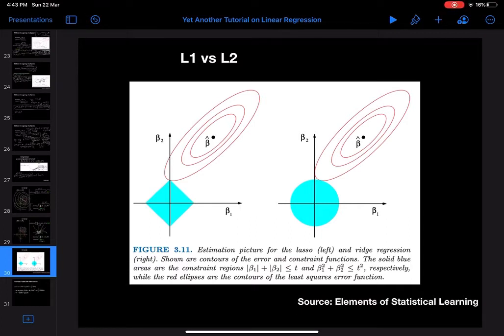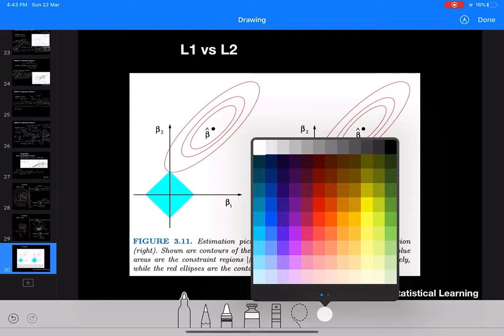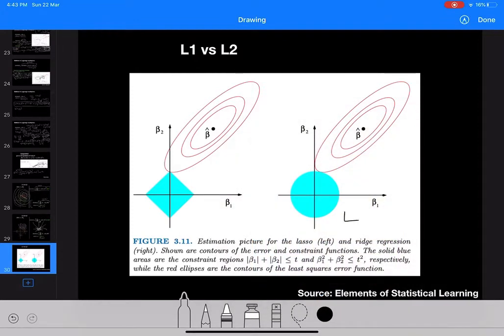Let's summarize L1 vs L2 regularization in this video. What we can see is that this blue circle is the L2 constraint, and this blue diamond shape is our L1 constraint space.